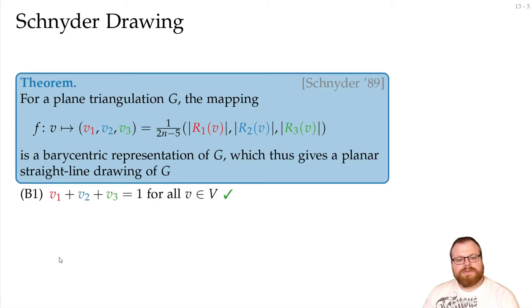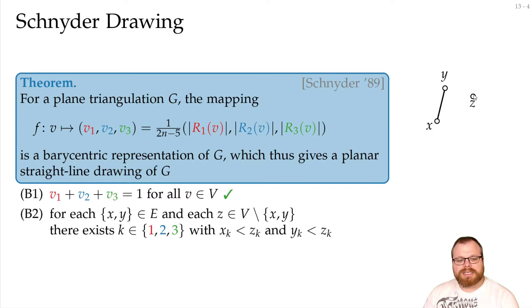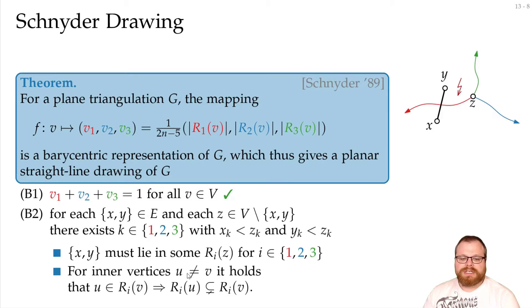Second, we have to prove that for every edge and every other vertex, there is some index such that the number here is larger than both of these. Now we know that this edge must lie in some region of this vertex, because if it does not, then this edge has to cross the red path, which is not allowed. And we just proved the property that for all the interior vertices that lie in some region, the region in the same direction gets smaller. So the number here for x and y will also be smaller than the number of z.